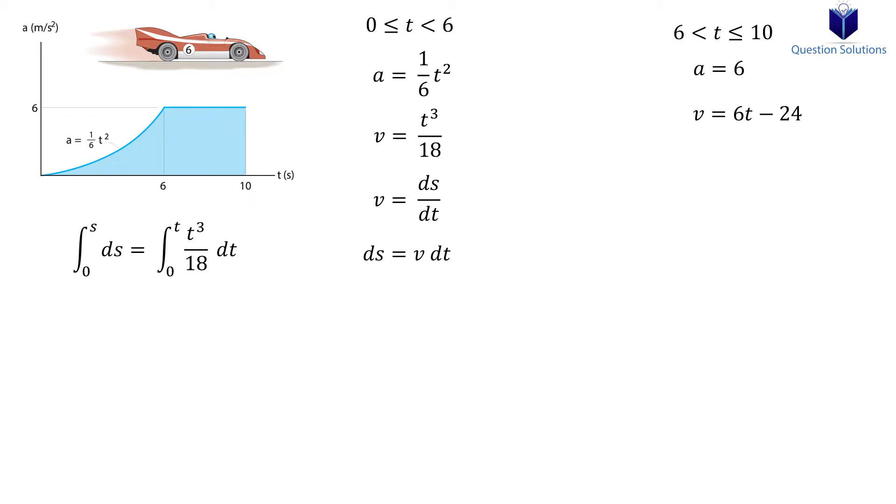The lower bounds for our integral are 0 meters and 0 seconds, since the car starts from the origin at a time of 0. Solving our integral gives us the displacement equation for the first segment. Now we need to know how far the car traveled in 6 seconds, so let's substitute and find out, which gives us 18 meters.